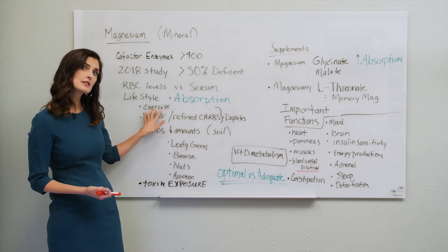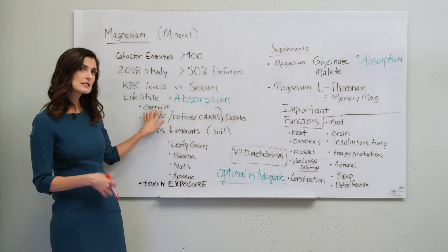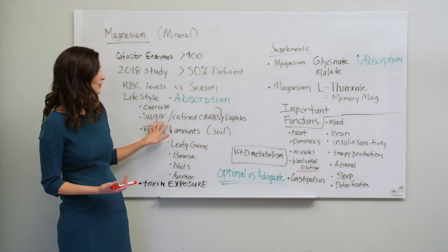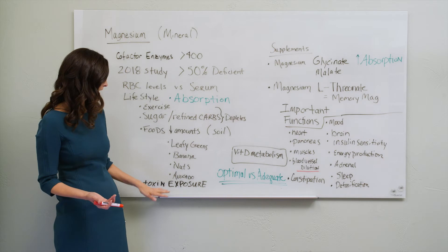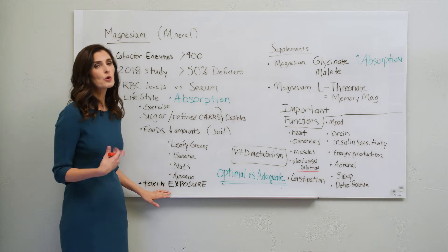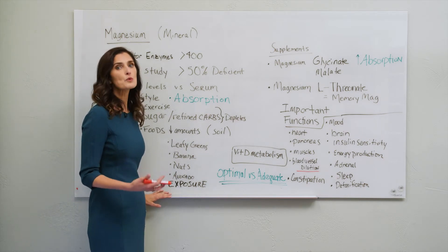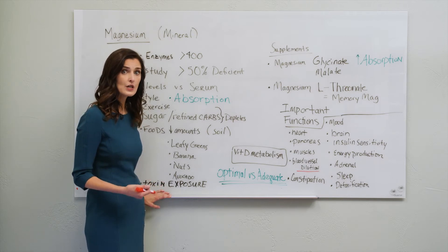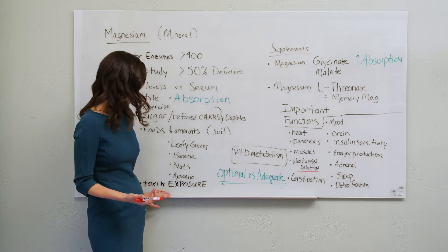Things like exercise can take extra amounts of magnesium and burn it up, as well as eating sugar and refined foods, the carbs. That will deplete it and then toxin exposure. We're all exposed to small amounts of imperceptible environmental toxins every day, and that process of trying to get those out of our body also depletes the magnesium.